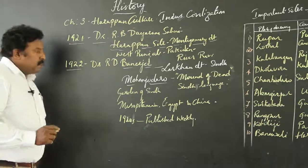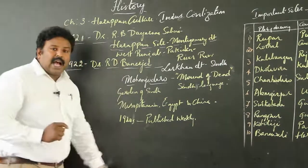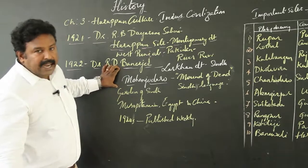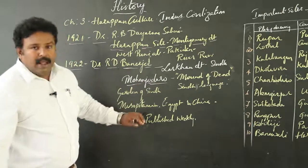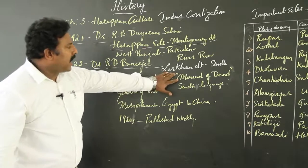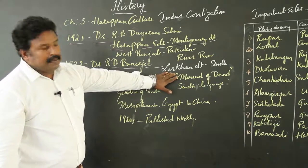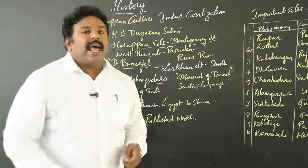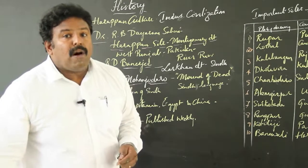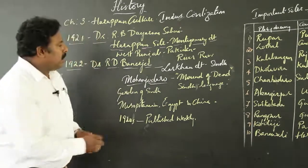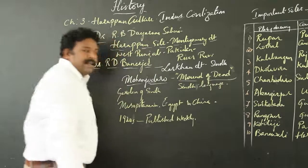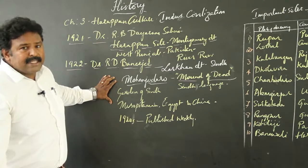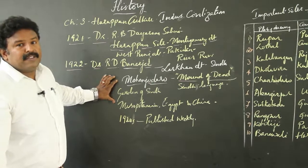Further, in the year 1922, Dr. R. D. Banerjee — Rakhal Das Banerjee — excavated another important site which was at Mohenjo-Daro, found at Larkana district of Sindh. Mohenjo-Daro, in the Sindh language, was considered as 'Mound of Dead.' Altogether, Mohenjo-Daro was also considered the 'Garden of Sindh' — you can very well add that in your examination.